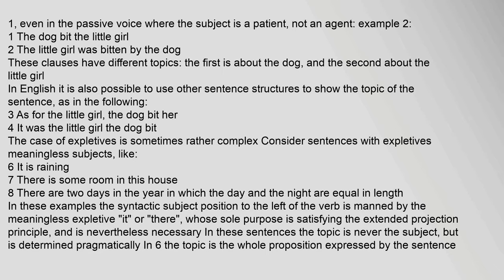Example: (1) The dog bit the little girl. (2) The little girl was bitten by the dog. These clauses have different topics — the first is about the dog, and the second about the little girl. In English it is also possible to use other sentence structures to show the topic of the sentence, as in: (3) As for the little girl, the dog bit her. (4) It was the little girl the dog bit.